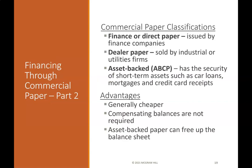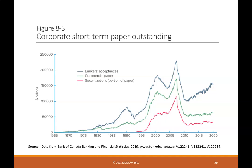Commercial paper classifications: Finance or direct paper is issued by finance companies. Dealer paper is sold by industrial or utility firms. Asset-backed paper has the security of short-term assets such as car loans, mortgages, and credit card receipts. Advantages include that it is generally cheaper, compensating balances are not required, and asset-backed paper can free up the balance sheet. Figure 8-3 shows corporate short-term paper outstanding.